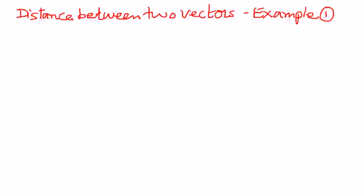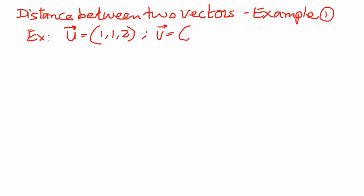Let us say the two vectors given to us are as follows. If vector u is given to us as (1, 1, 2) — these are the components of vector u — and the components of vector v are given to us as (-1, 3, 0), and we want to find the distance between these two vectors.